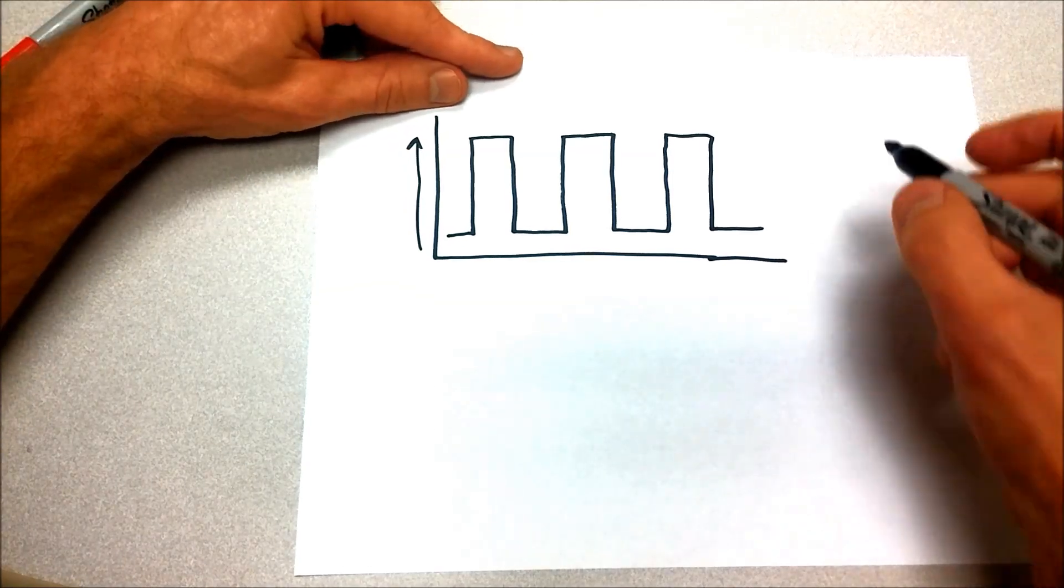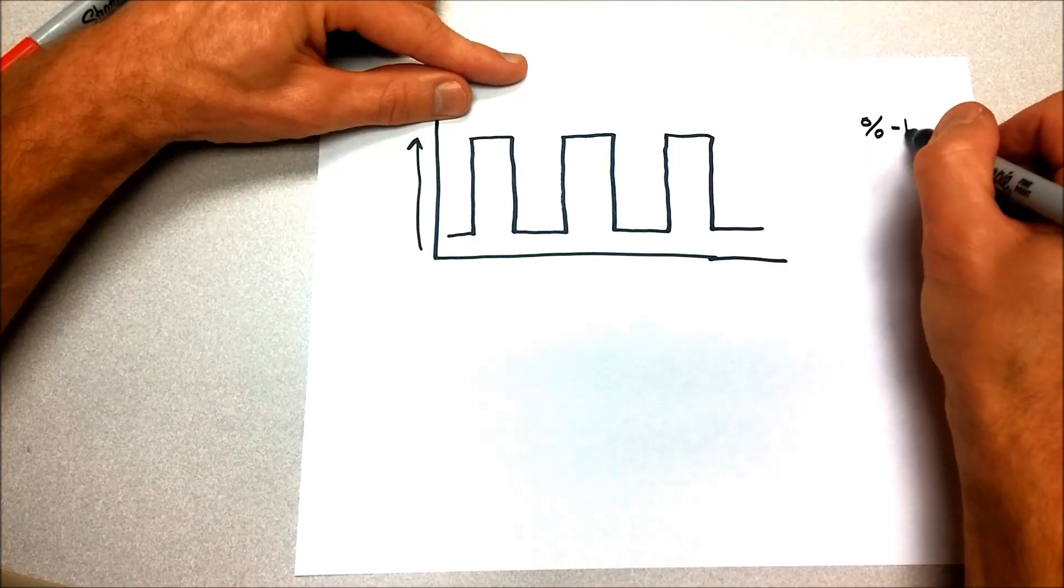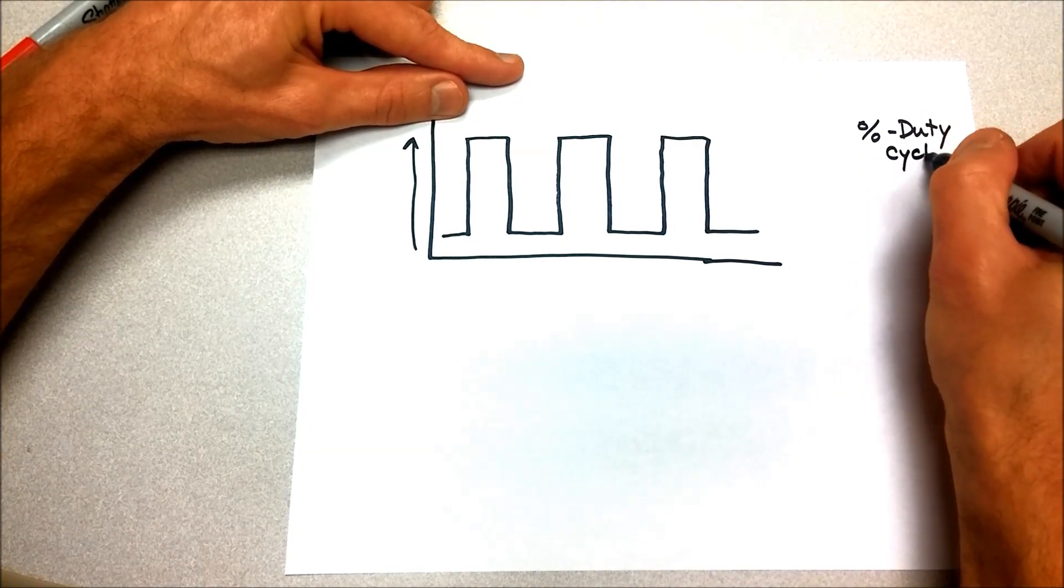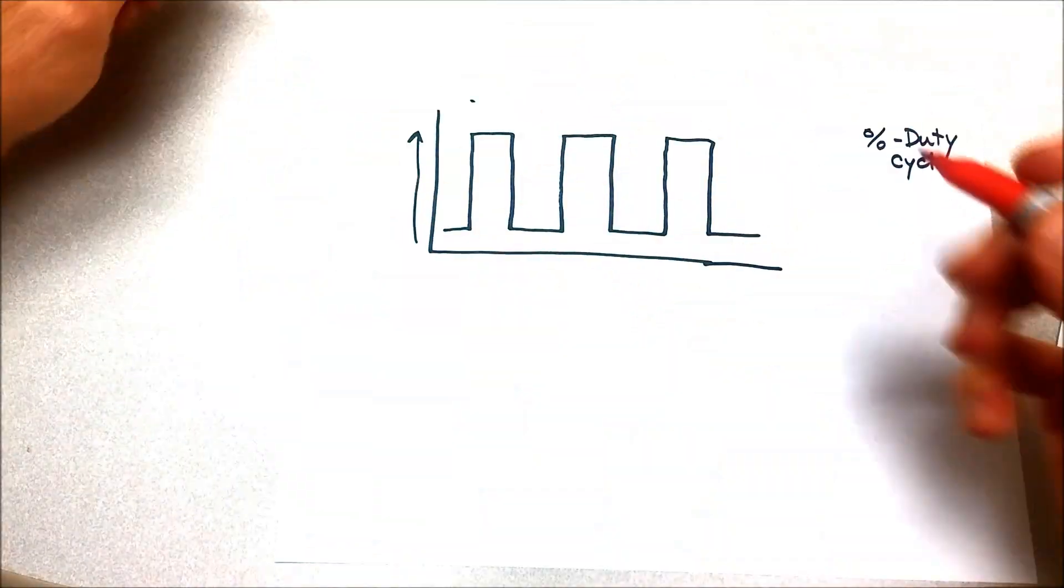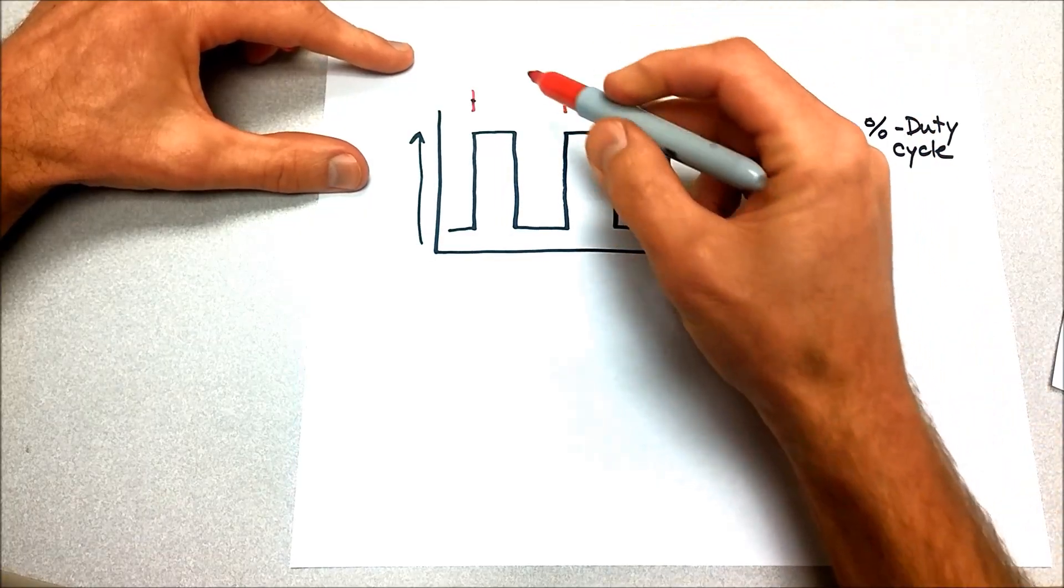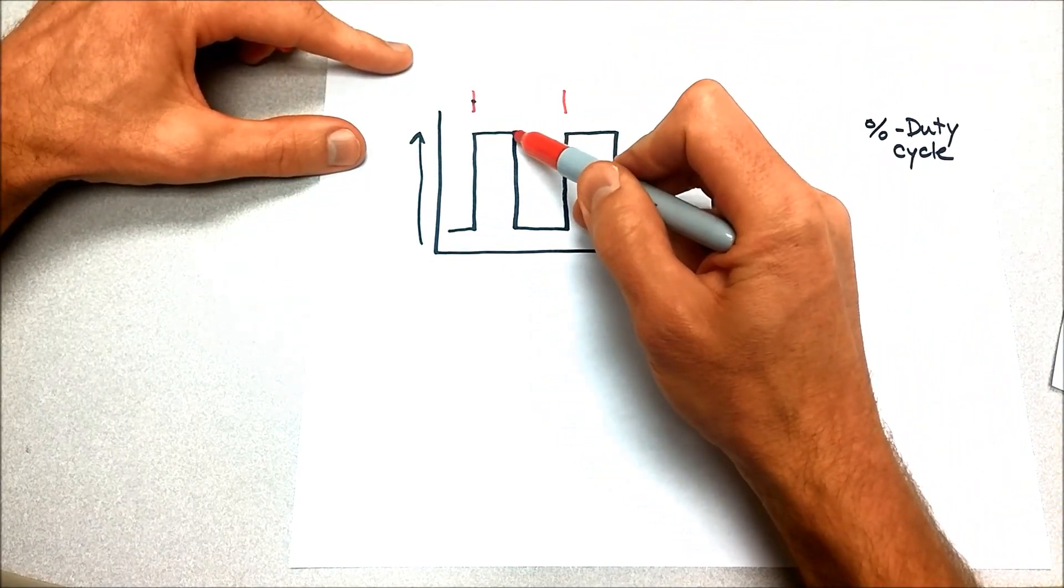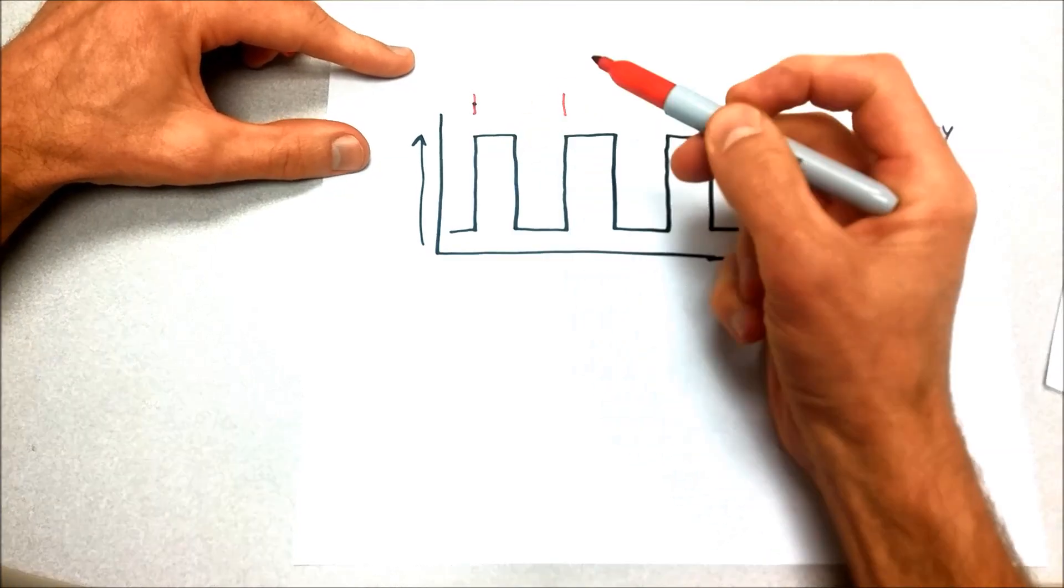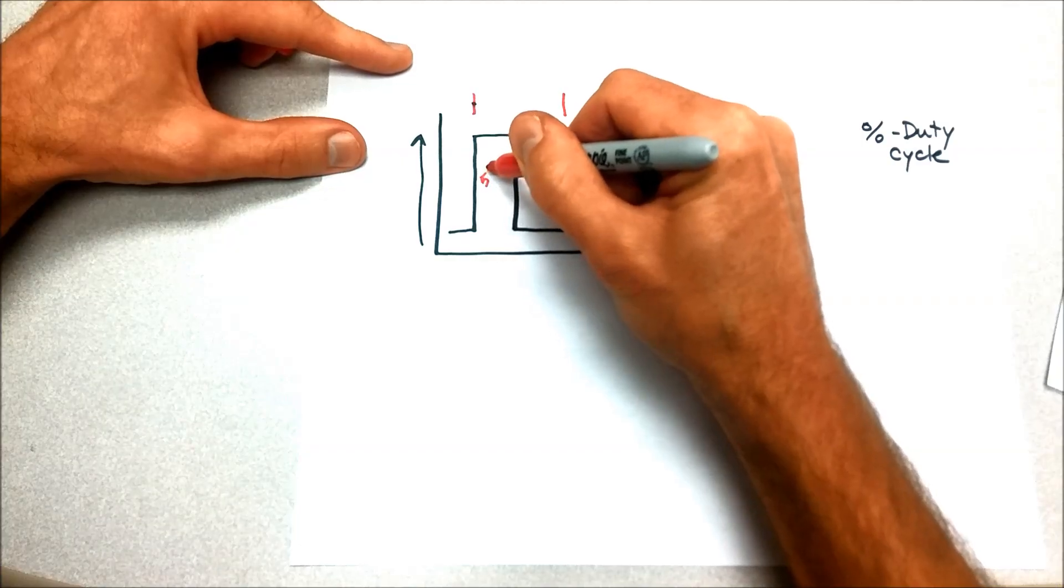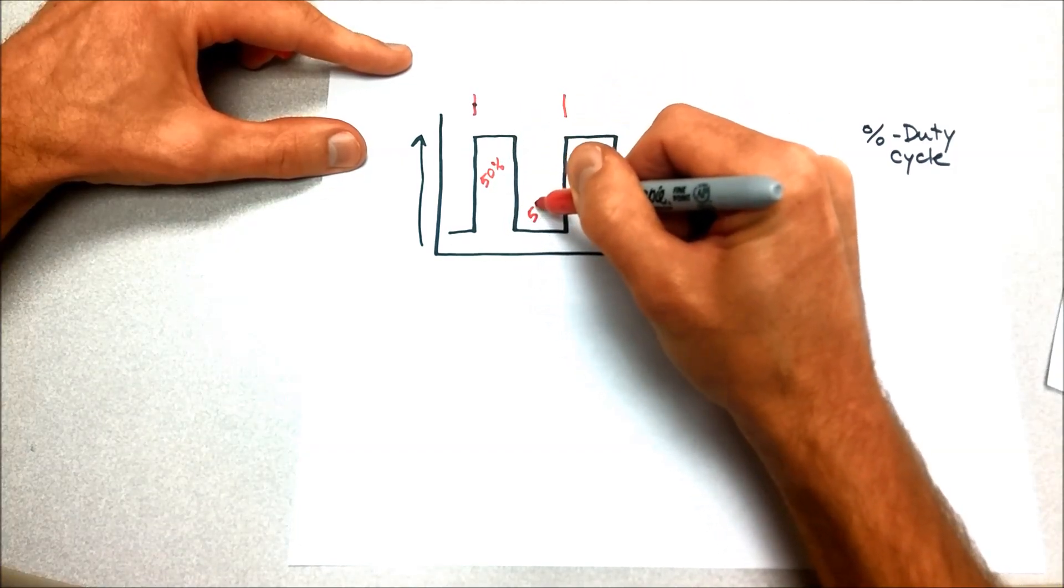One is in a percentage, and that's called duty cycle. We simply take one cycle, which is from here to here, and we ask ourselves, what percentage of that cycle was this turned on for? And here it looks like roughly 50%. So we could say it was on for 50% of the time, and it was off for 50% of the time.